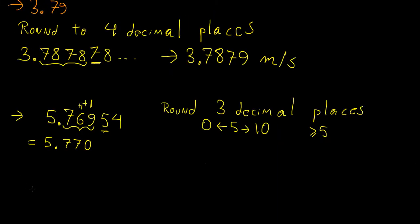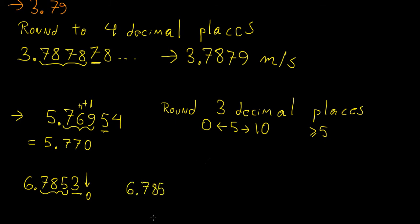Now let's say we have the number 6.7853 and we want to round to three decimal places. The first three decimals are 7, 8, 5. We look at the next digit — that's 3. Since 3 is much closer to zero than to 10, we round down, and the answer is simply 6.785.